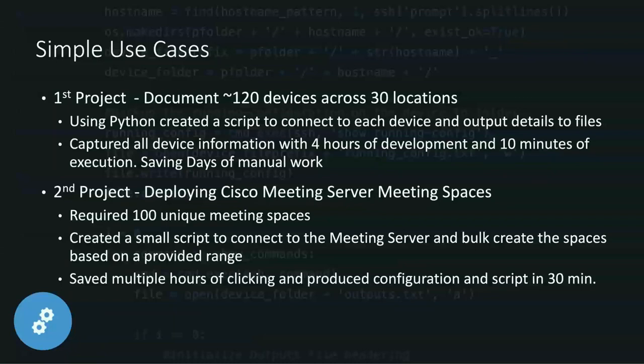The second use case was much smaller. For those with a voice or collab background — I deployed a Cisco Meeting Server, which is the video bridging server that Cisco acquired from Acano about six or seven years ago. It has a fully exposed API. I had to build effectively meeting spaces or personal meeting rooms. To do that through the UI is: click, fill in six boxes, accept, do this again — and when you have to do over a hundred of them, it gets very tedious and very error prone.